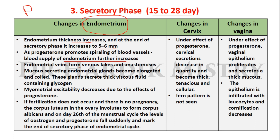Endometrial veins form venous lakes and anastomoses. Mucus-secreting endometrial glands become elongated and coiled, secreting a thick viscous fluid containing glycogen. Myometrial excitability decreases due to the effect of progesterone. All these changes in the endometrium favor implantation of the fertilized ovum in the walls of the uterine cavity.